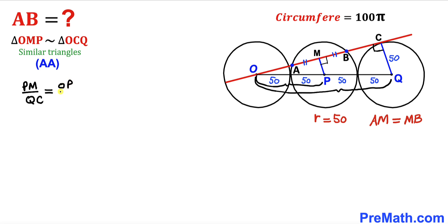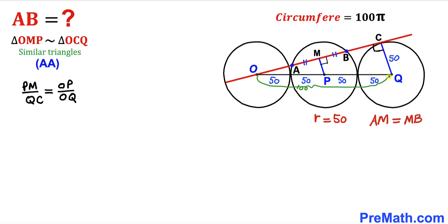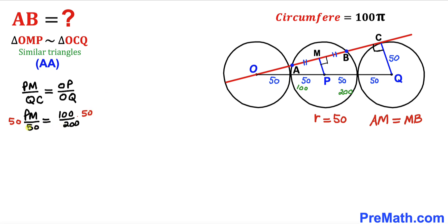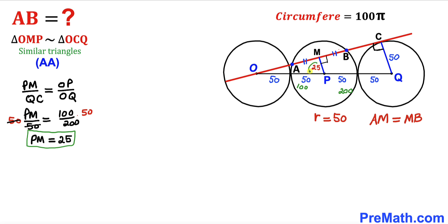The length OP equals 50 + 50 = 100, and OQ equals 50 + 50 + 50 + 50 = 200. Filling in the proportion: PM / 50 = 100 / 200. Multiplying both sides by 50, PM = 25 units.